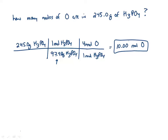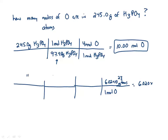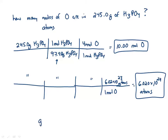If the question asked for atoms instead of moles, you just add one step at the end: one mole of oxygen is 6.02 times 10 to the 23rd atoms. Everything up above stays the same — you simply multiply your answer of 10 moles by 6.02 times 10 to the 23rd, giving you 6.02 times 10 to the 24th atoms. If you can remember the grams to moles to atoms pathway, that should be enough to get you most questions in Chapter 7.